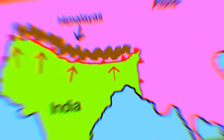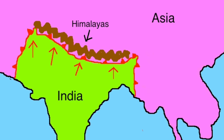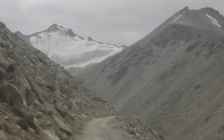Ever since the Indian plate subducted under the Asian plate around 20 million years ago, there has been horizontal compression of the lithosphere and topographic upliftment.